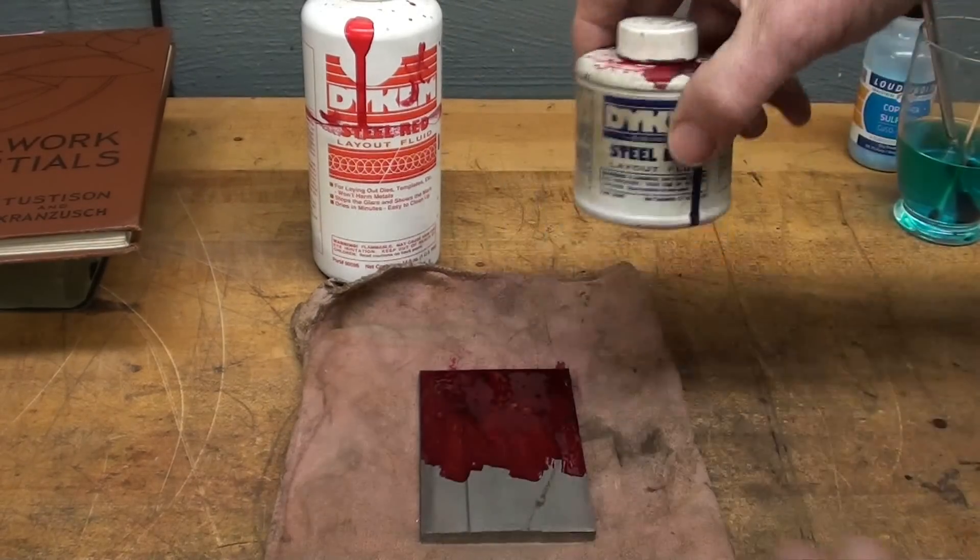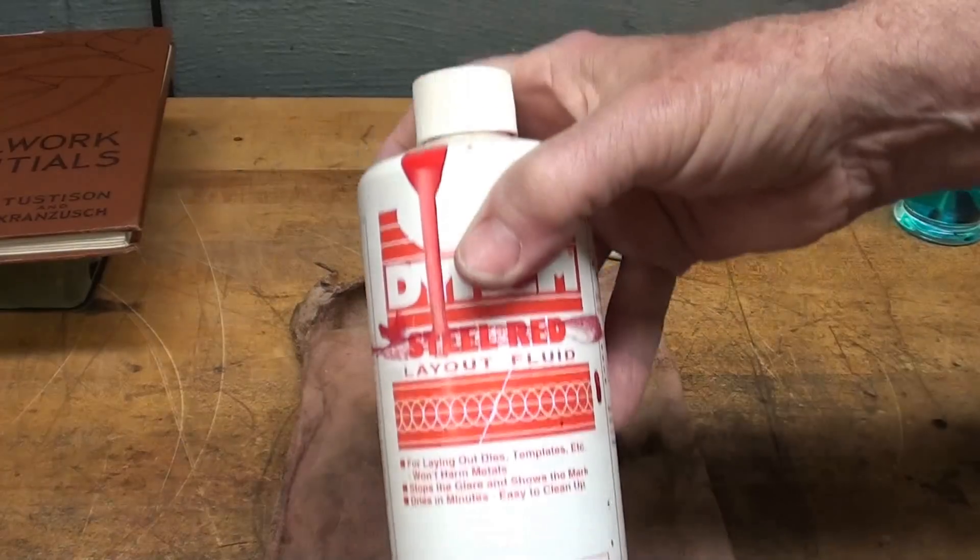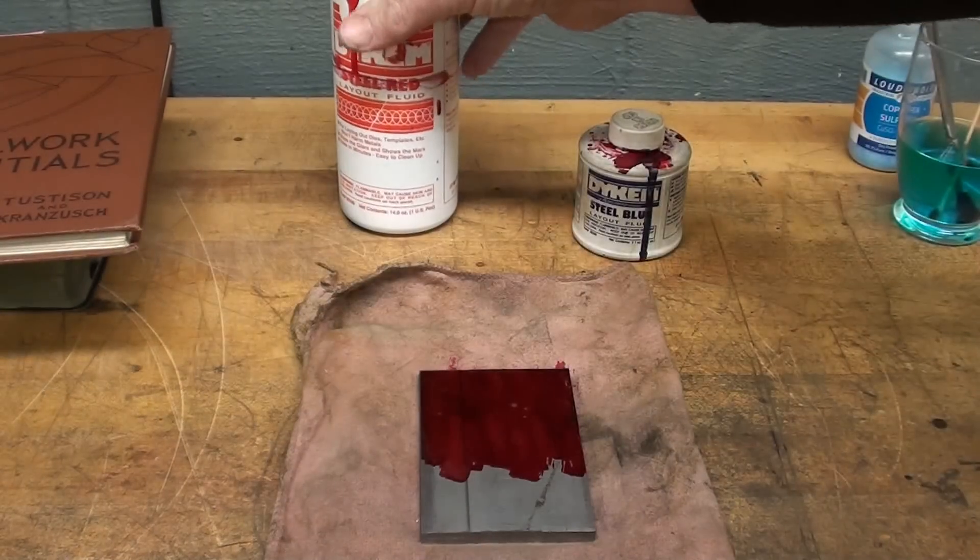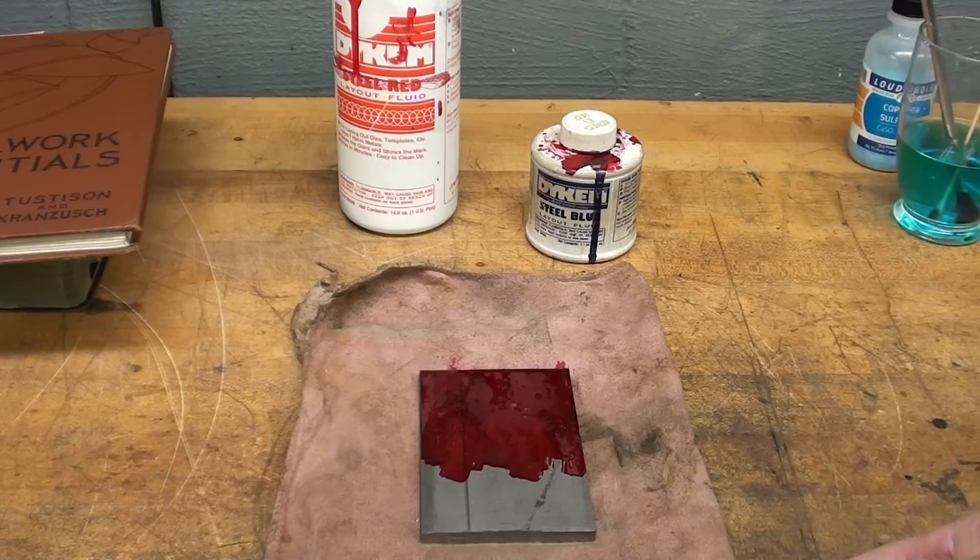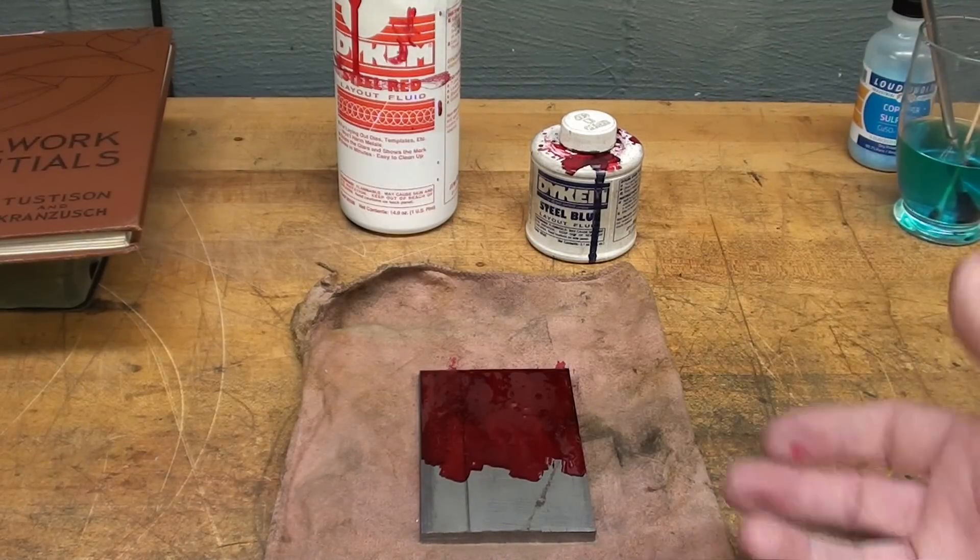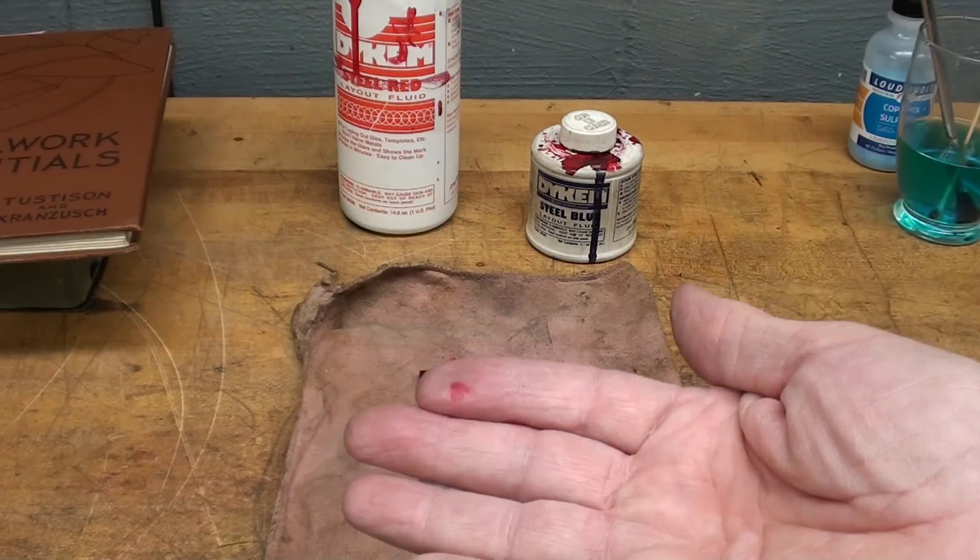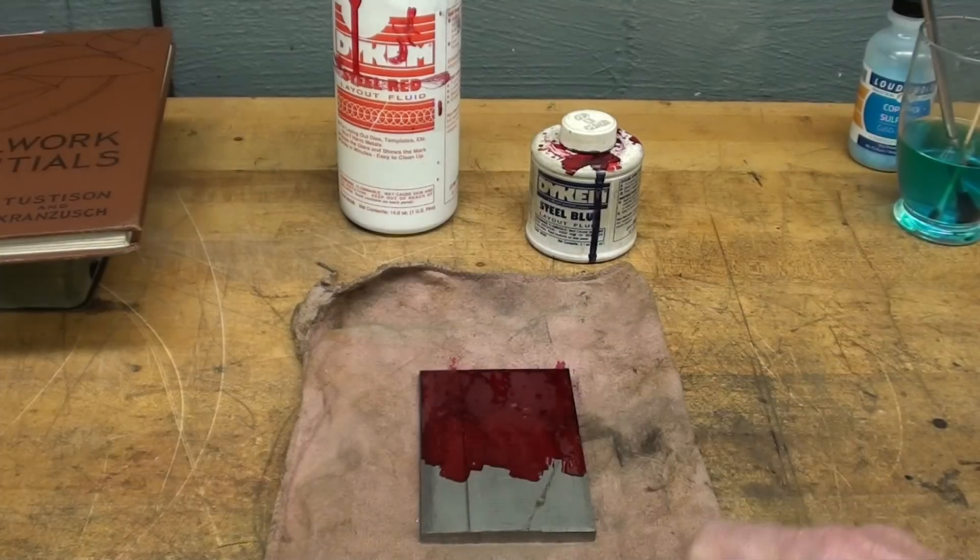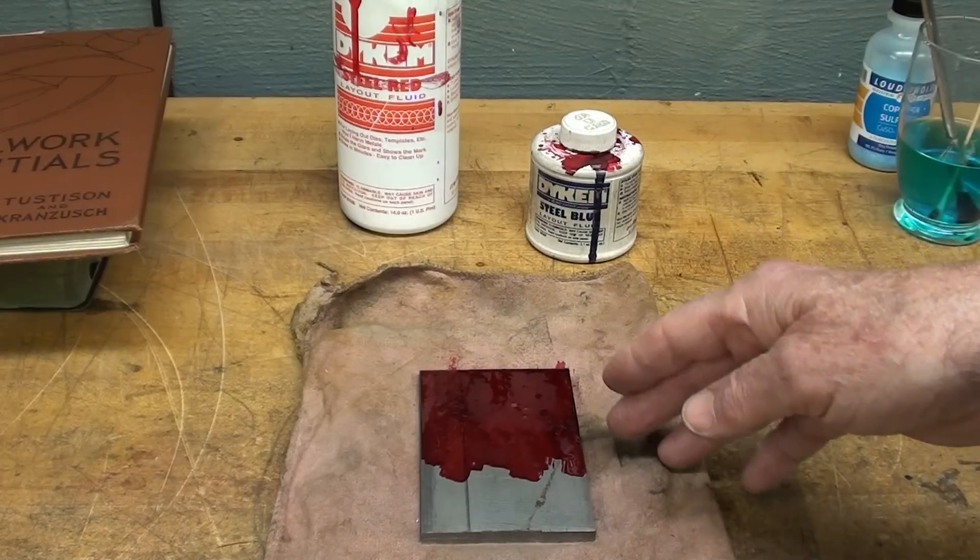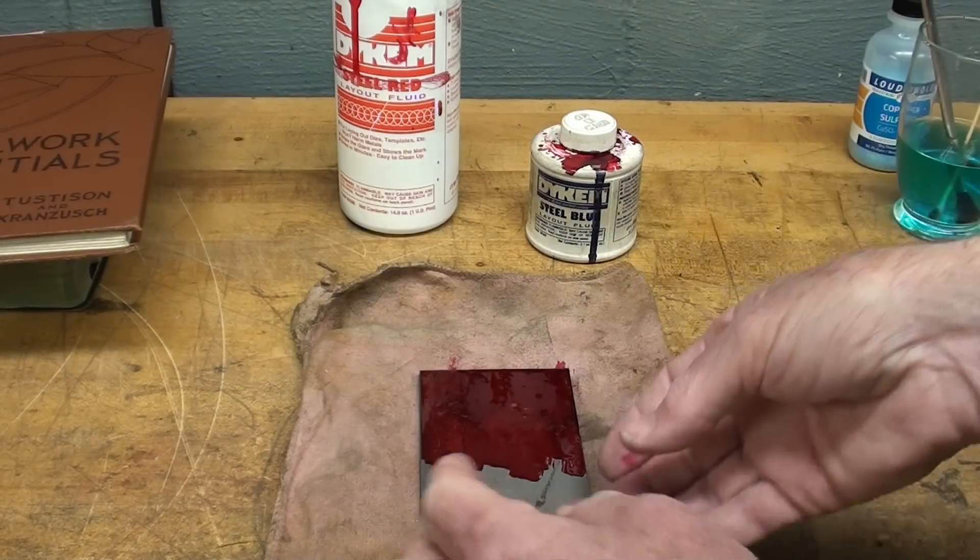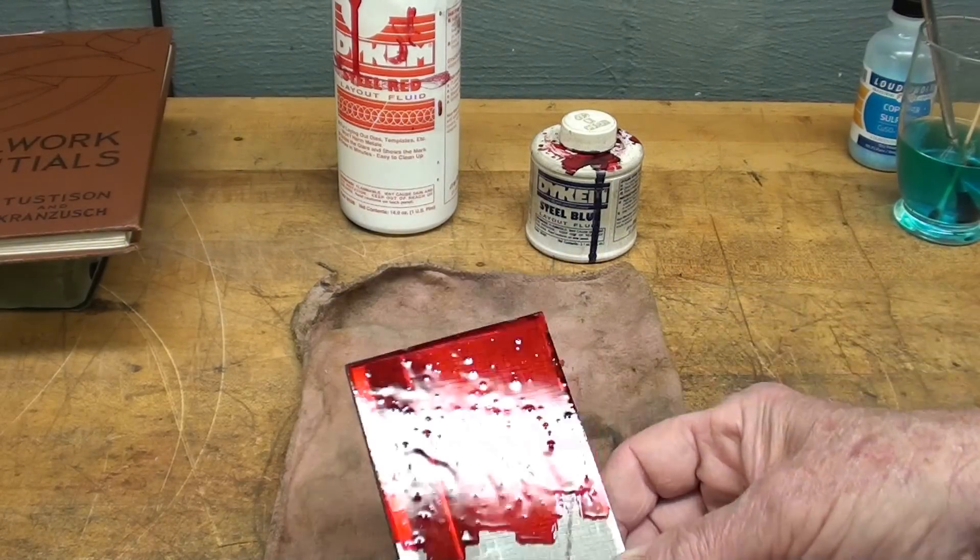Starrett has it and Enco used to have it. You can buy it in bulk or different size cans with the built-in brush. It is alcohol based so it will quickly dry, but it can be messy when you get it on your hands. One thing I do not like about it is that it takes quite a while to dry, especially if you do a sloppy job of application.